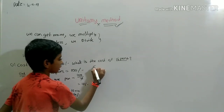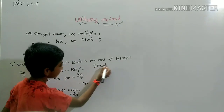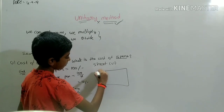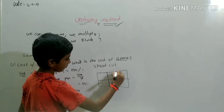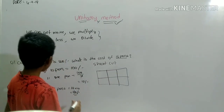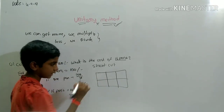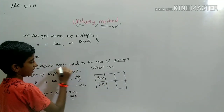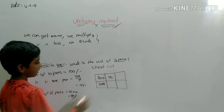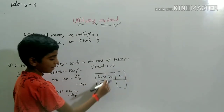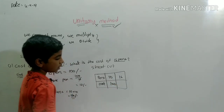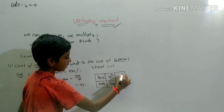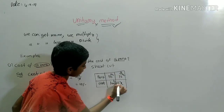Now you can see the shortcut method. We draw a table with two columns: pens and cost. How many pens? Ten pens. Ten pens cost is 100 rupees. Sixteen pens cost we don't know, so we keep X. Ten is A1, sixteen is A2, one hundred is B1, and X is B2.